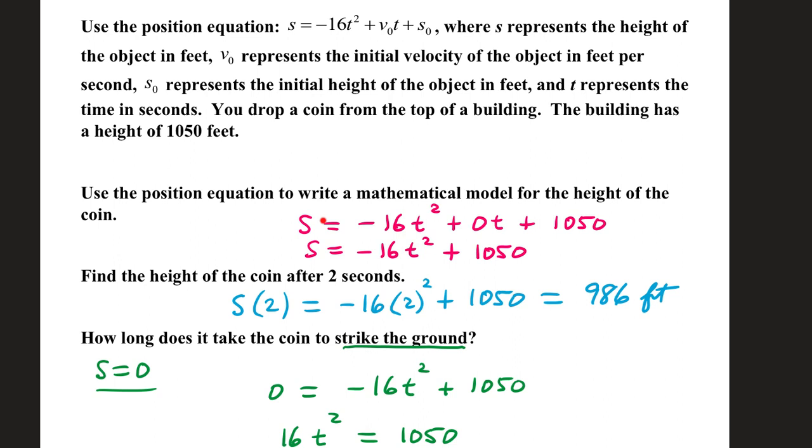We have S equals negative 16t squared. This is the downward acceleration of gravity. That won't change. Because we drop the coin and not throw it, V sub 0 is 0. We haven't thrown it up or down, we just released it. The height of the building is 1,050. Taking out that zero term, we have S equals negative 16t squared plus 1,050.